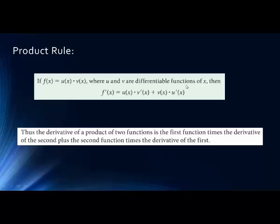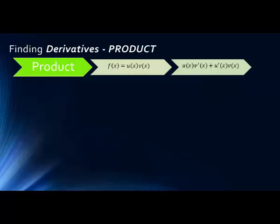As long as u and v are both differentiable functions, the derivative of f of x is equal to the first function times the derivative of the second function, plus the second function times the derivative of the first. So we have a product, our two factors — the derivative of the first times the second, plus the derivative of the second times the first. I know that seems a little confusing, but when you try examples, it's actually quite straightforward.